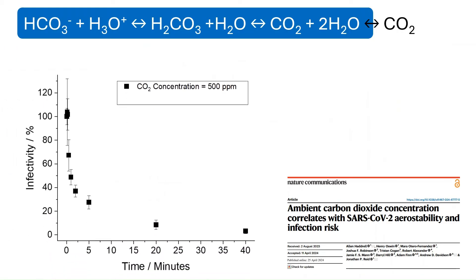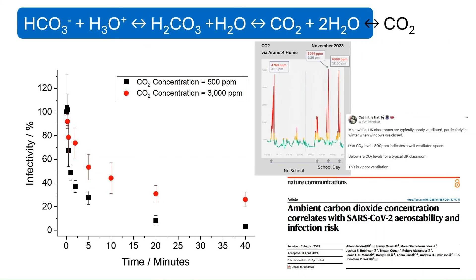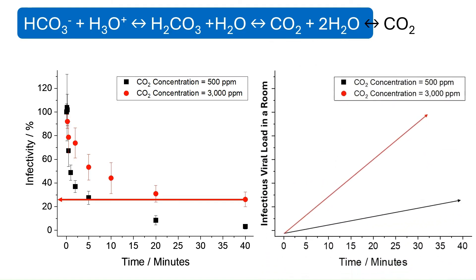Consider this: in clean air, over 97% of SARS-CoV-2 decays within 40 minutes. But if the concentration of CO2 is increased to just 3000 ppm — the level commonly reported in UK schools — the decay rate changes dramatically. After 40 minutes, almost 30% of the initial infectious dose is still present, and the rate of decay of this remaining fraction is exceedingly slow. This stabilization of the virus means that the infectious viral load in the room will begin to greatly accumulate, significantly increasing the risk of transmission.